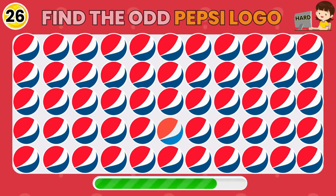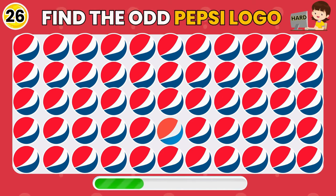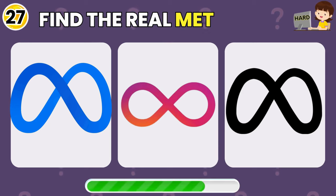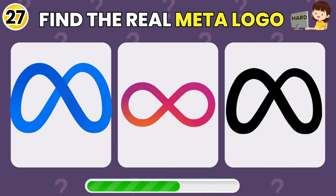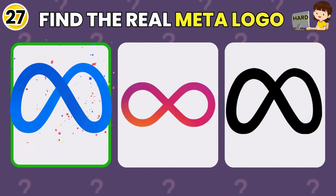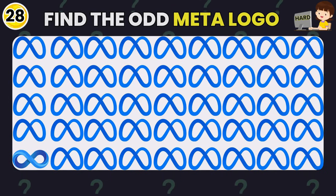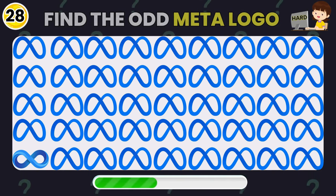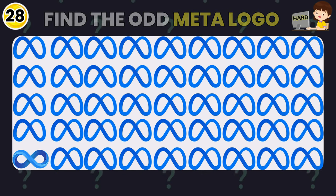Find the odd Pepsi logo. It's right here. Which one is the real logo? The real Meta logo is the first one. Which one is the odd one here? You got it — Bingo!